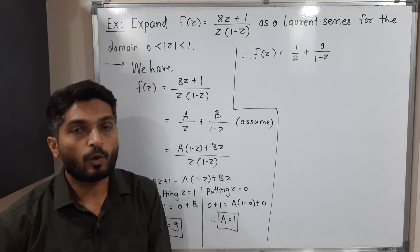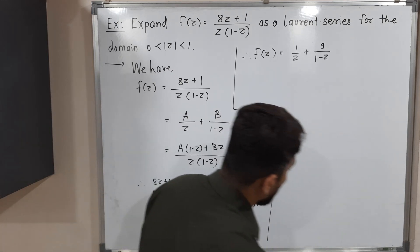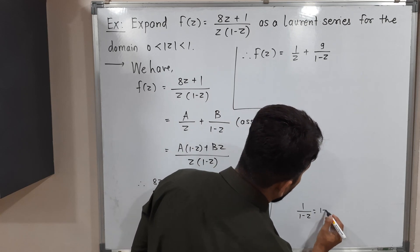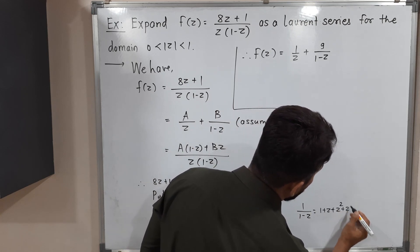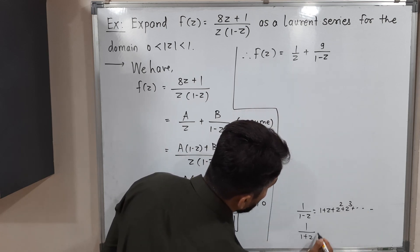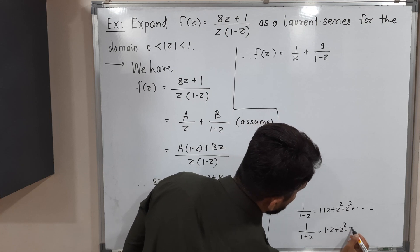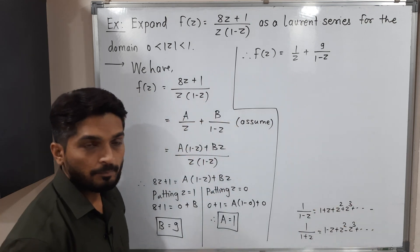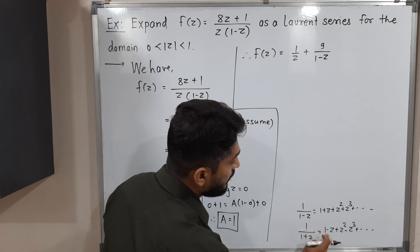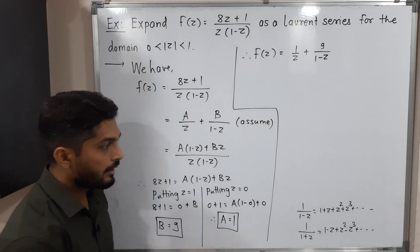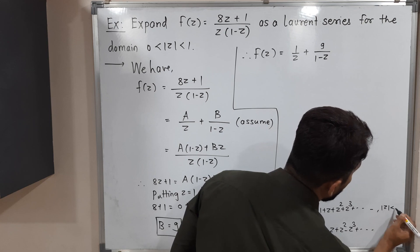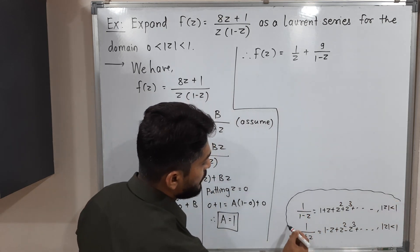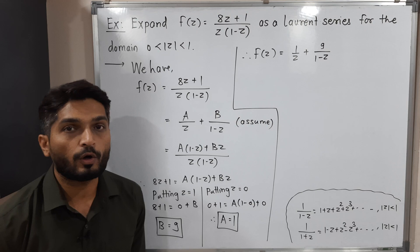To find the Laurent series, recall these two expansions: 1/(1 - z) = 1 + z + z² + z³ + ..., and 1/(1 + z) = 1 - z + z² - z³ + ... The condition for these to hold is |z| < 1.